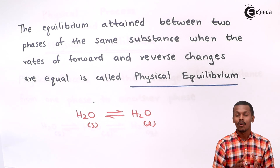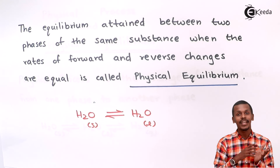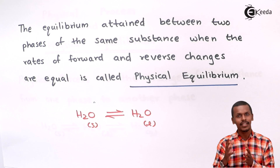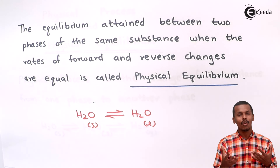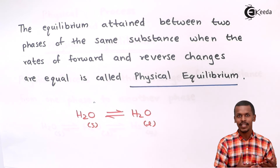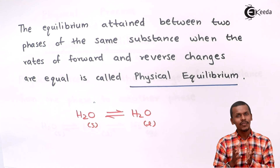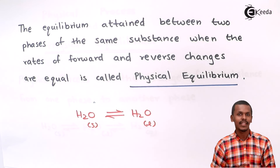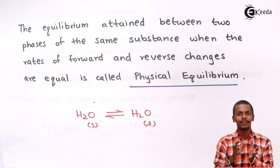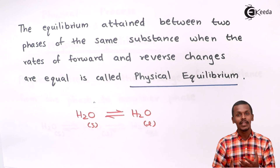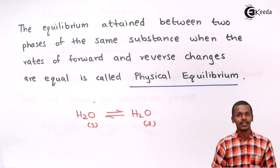At the position where the rate of the forward physical transition and the rate of the reverse physical transition are found to be equal, we say that the system has acquired equilibrium. Because this deals with the physical state of a particular substance, that kind of state is basically known as physical equilibrium.